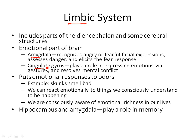The cingulate gyrus plays a role in allowing us to express our emotions — crying, frowning, smiling — how you express your emotions. It also allows you to resolve mental conflict. It allows you to put an emotional response to an odor. Think about the sense of smell — the response you get is typically emotional: it either smells good or smells bad. That tells you whether you want to be near it, whether it's something you can eat, or whether you should stay away from it — danger. For example, a skunk smells bad, and that's a warning signal to stay away. So we react emotionally to things that we smell.